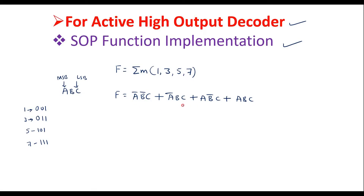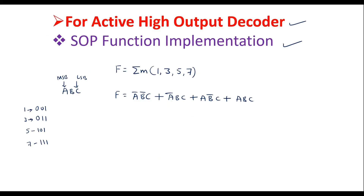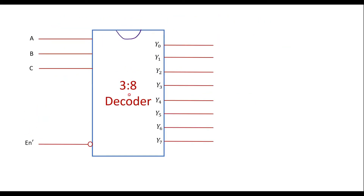We will implement this using a decoder with active high outputs. Since the highest min term is 7, we need a 3-to-8 decoder. Consider a 3-to-8 decoder with inputs a, b, c. I will consider an active low enable input. All outputs of this decoder are active high outputs.